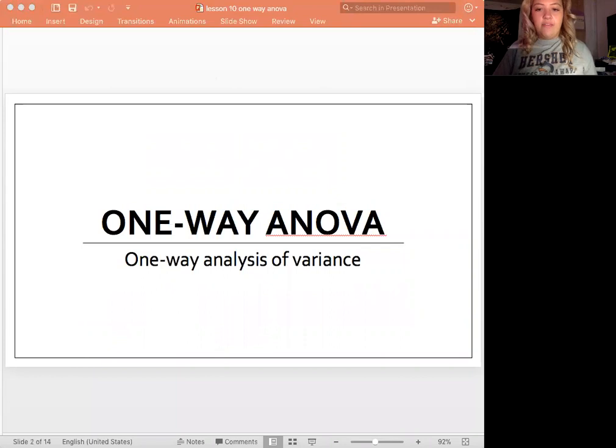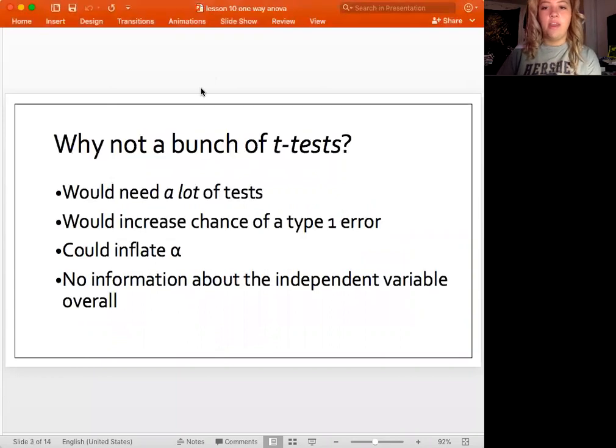So this is just another way we can be looking at variance. Let's start by talking about a question that's usually asked: why wouldn't we just do a bunch of T-tests here? Because ANOVA is kind of similar to that.